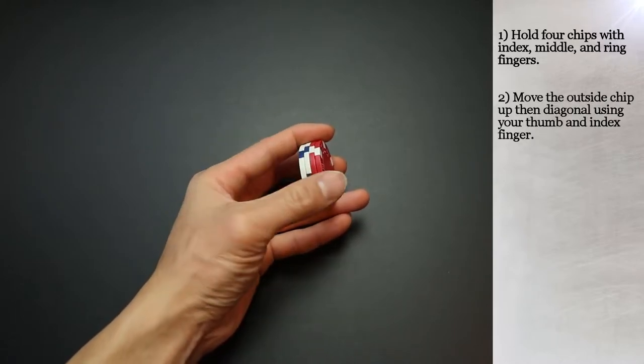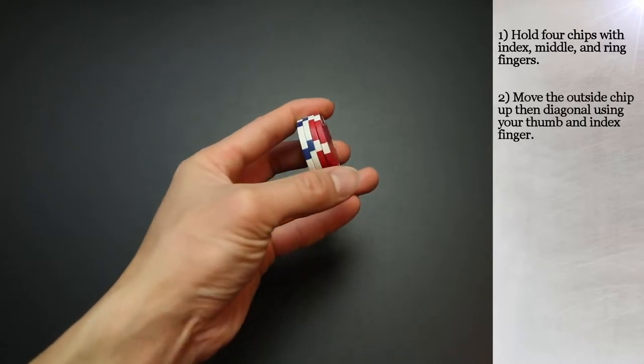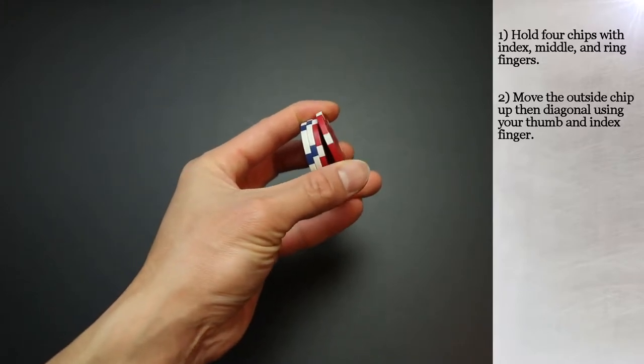Then you'll use the thumb to move the outside chip up by pushing up then diagonal against your index finger.